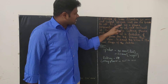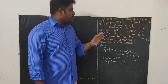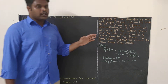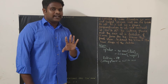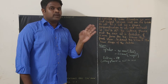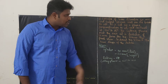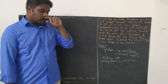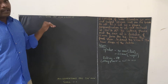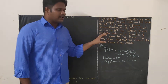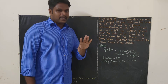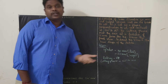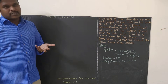It is cut by a plane perpendicular to VP and inclined at 50 degrees to HP. The cutting plane meets the axis at a distance of 15 mm from the top. They are asking us to draw the sectional top view and the true shape of the section.